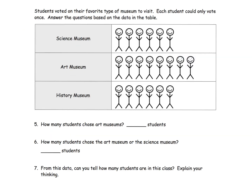The last slide for this video. It says students voted on their favorite type of museum to visit; each student could only vote for one. Answer the questions based on the data in the table. Now the thing we want to notice is they did not bundle this in tallies in groups of five — they just used people icons, and each person represents one person. So for science, that's one, two, three, four, five, six — six people voted for science.